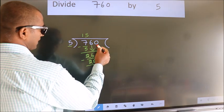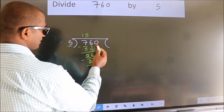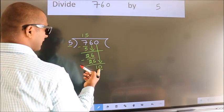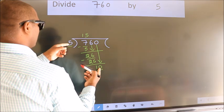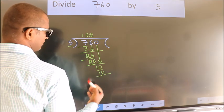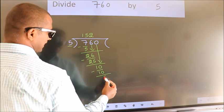After this bring down the beside number. So 0 down. So 10. When do we get 10 in the 5 table? 5 twos 10. Now we subtract. We get 0.